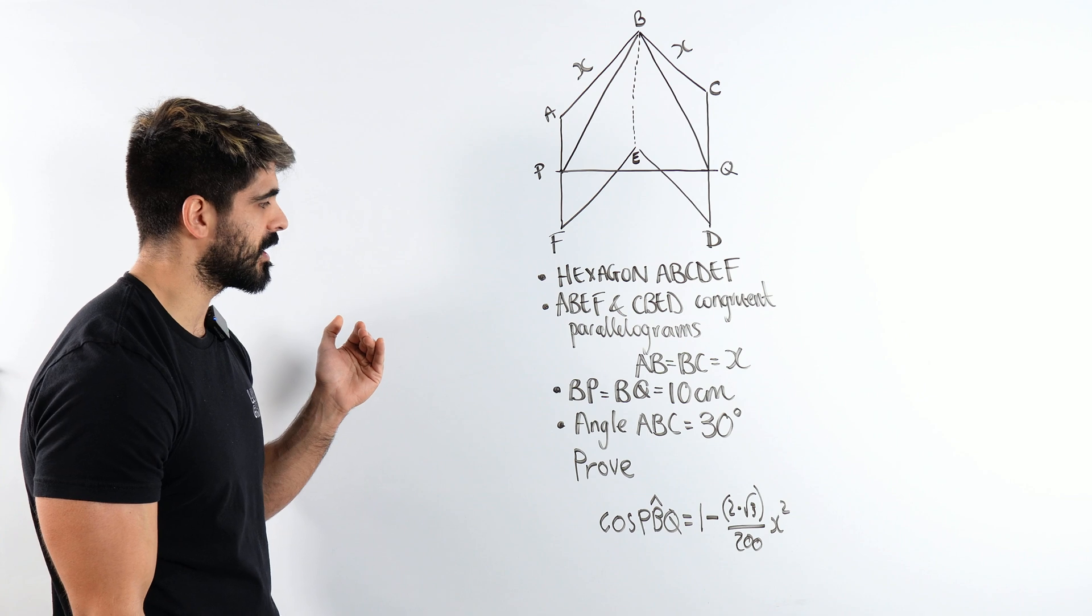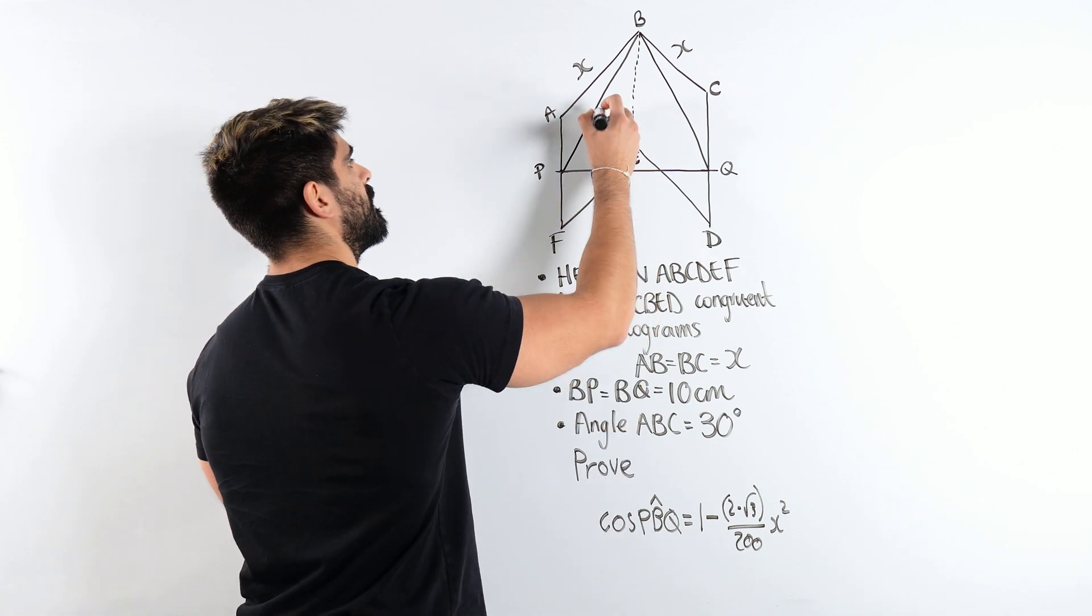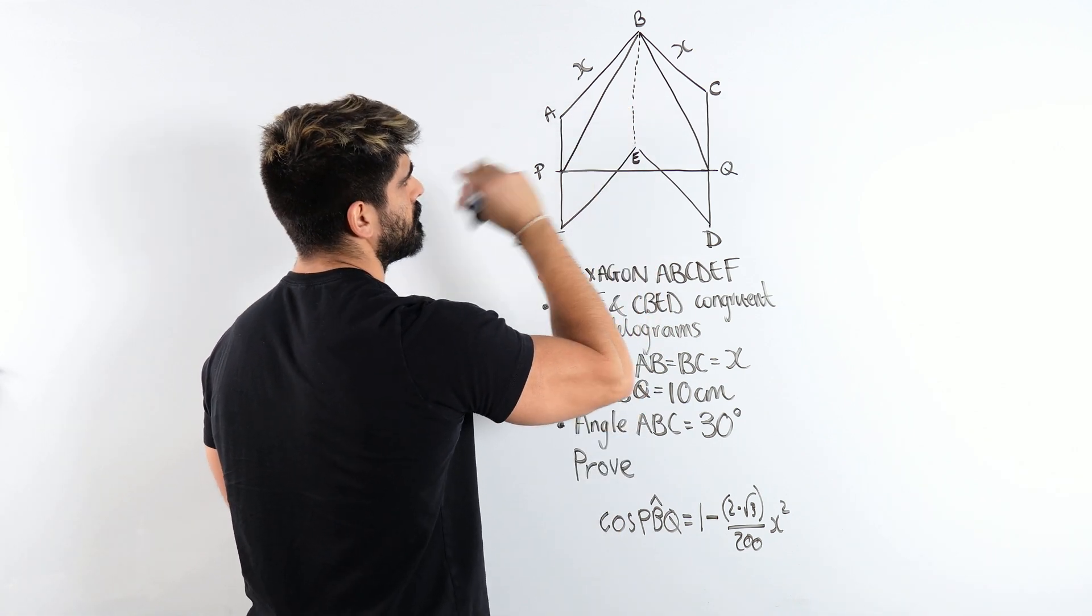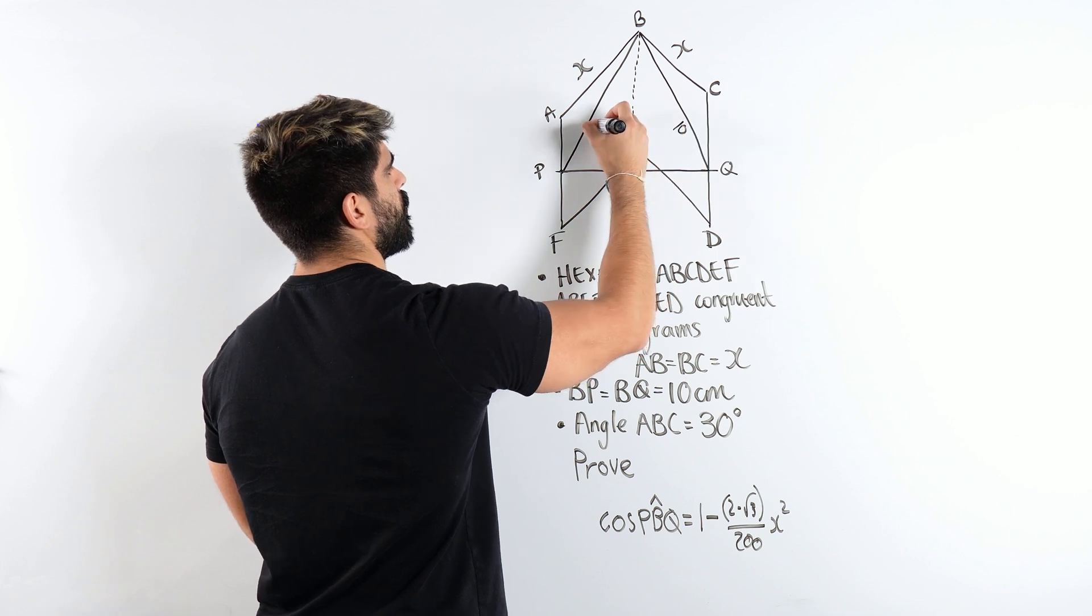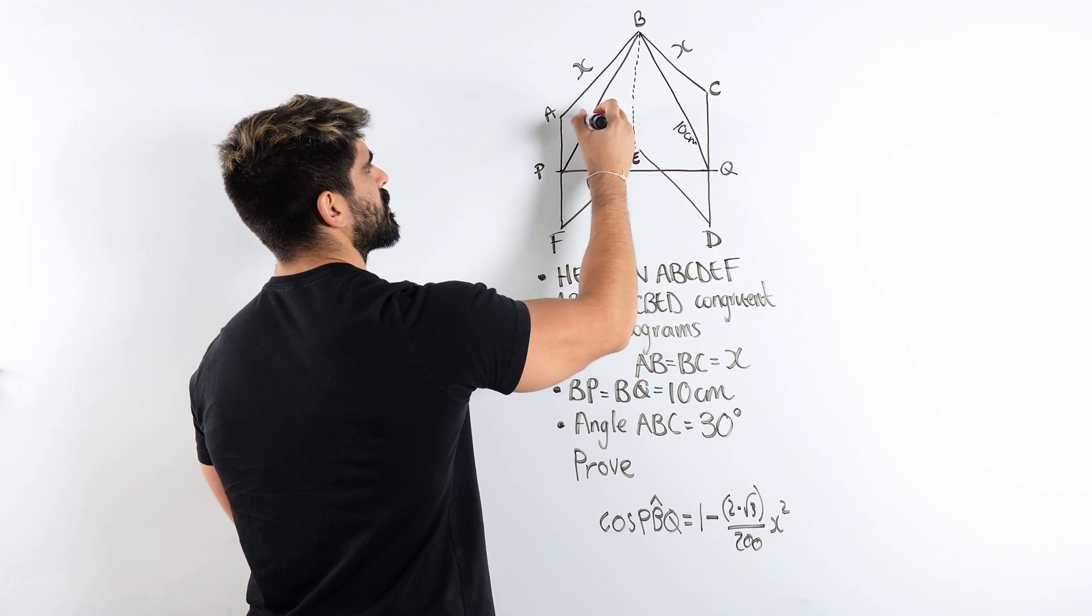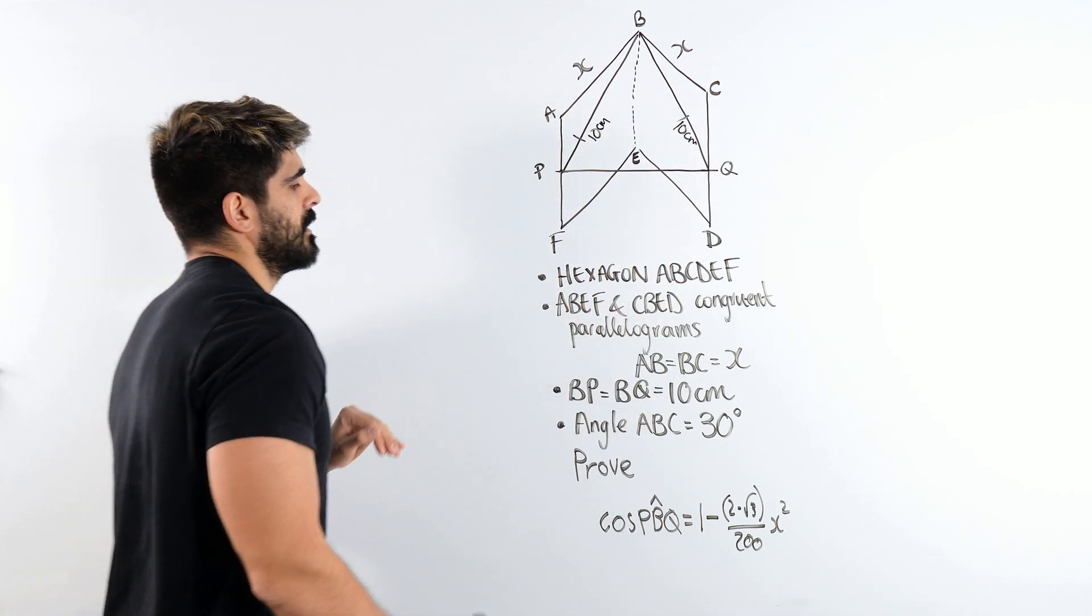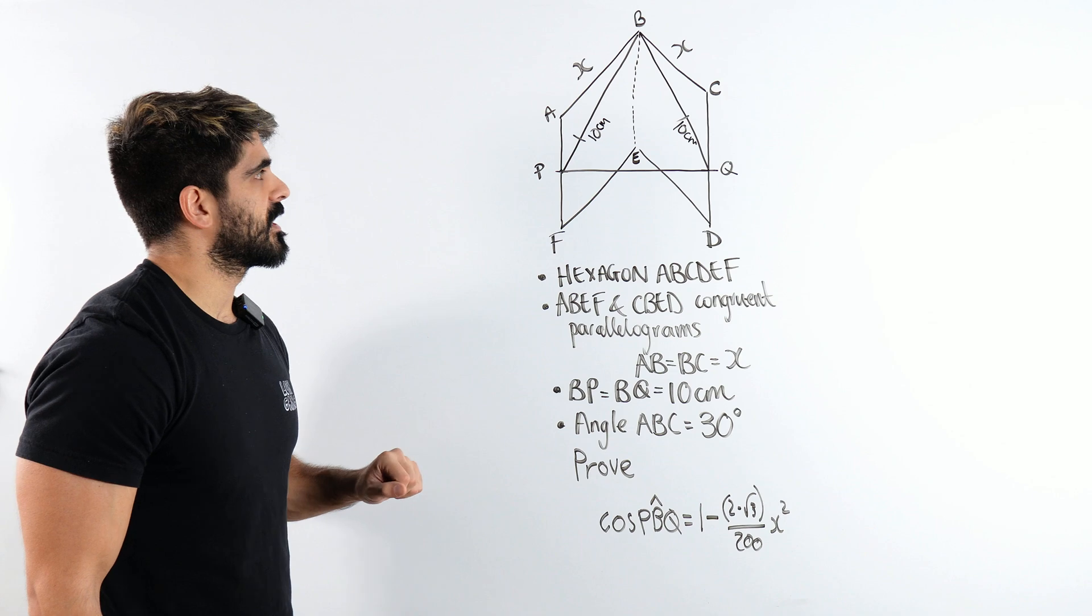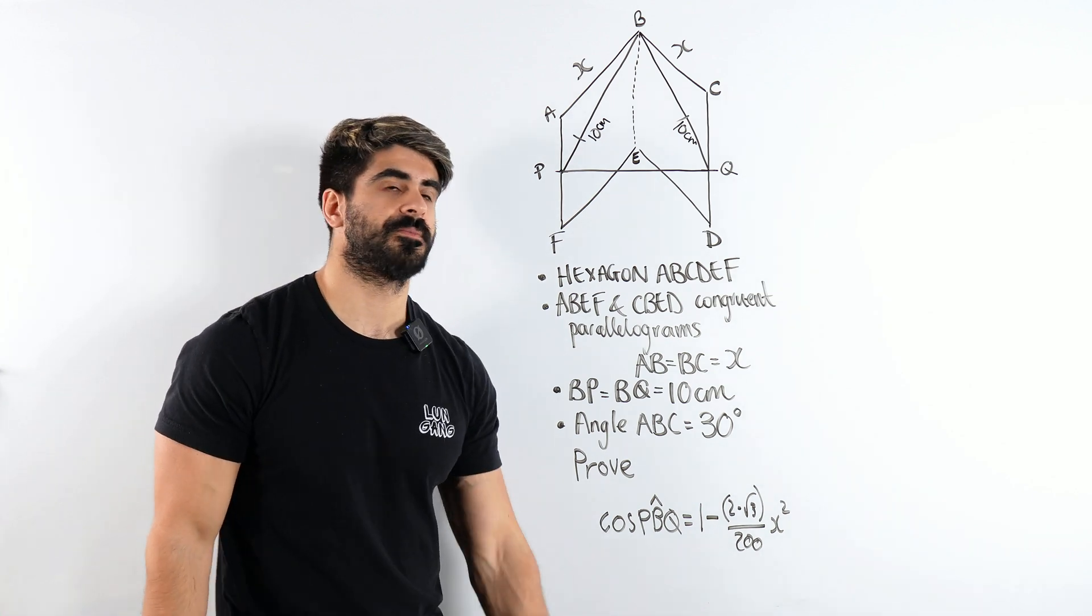Well, they have told us that BP and BQ is 10. So here's an isosceles triangle. I'm going to use this fact in a second. Because of this, I'm thinking about the cosine rule.